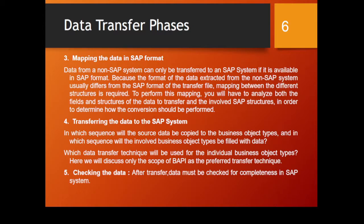In this phase, we decide the scope of BAPI: how many master data records or transaction types or business objects will be updated as a result of the file upload, what sequence will be used for updating business objects, and how many business objects will be involved. We also document and finalize answers to these questions before moving to phase 5.